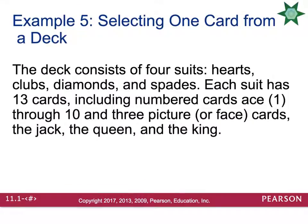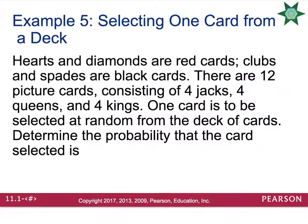When you play with the deck, keep in mind there's four suits, hearts, clubs, diamonds, and spades. Each suit has 13 cards that are labeled ace through 10. Three face cards, the jack, the queen, and the king. Hearts and diamonds are going to be the red cards. Clubs and spades are the black cards. There are 12 face cards, four jacks, four queens, and four kings.